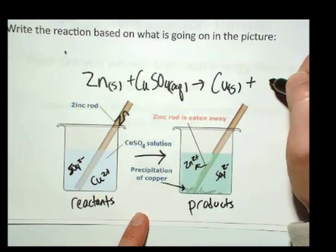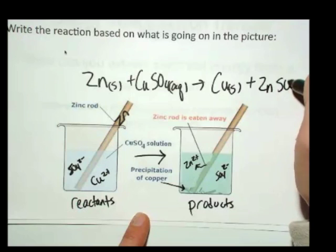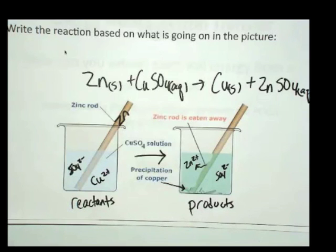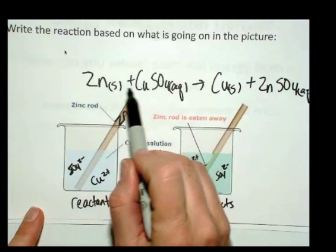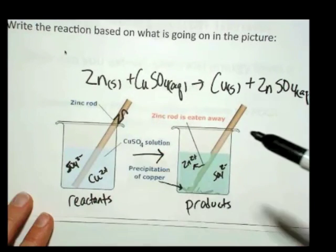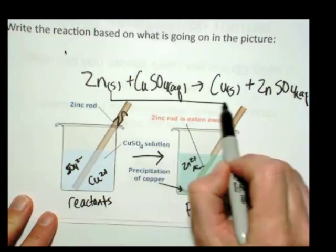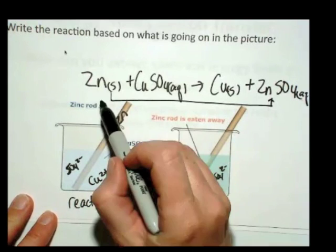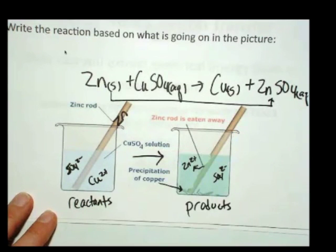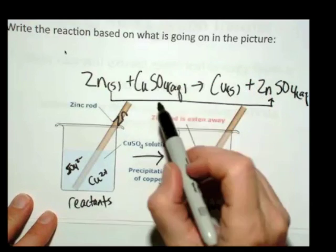We probably still have some copper ions and whatnot in the solution as well. But the important thing is the product, then, is zinc sulfate, aqueous. So this is a spontaneous reaction. When I put these two reactants together, I'm going to have an oxidation-reduction reaction where the zinc is going to be oxidized and the copper is going to be reduced.